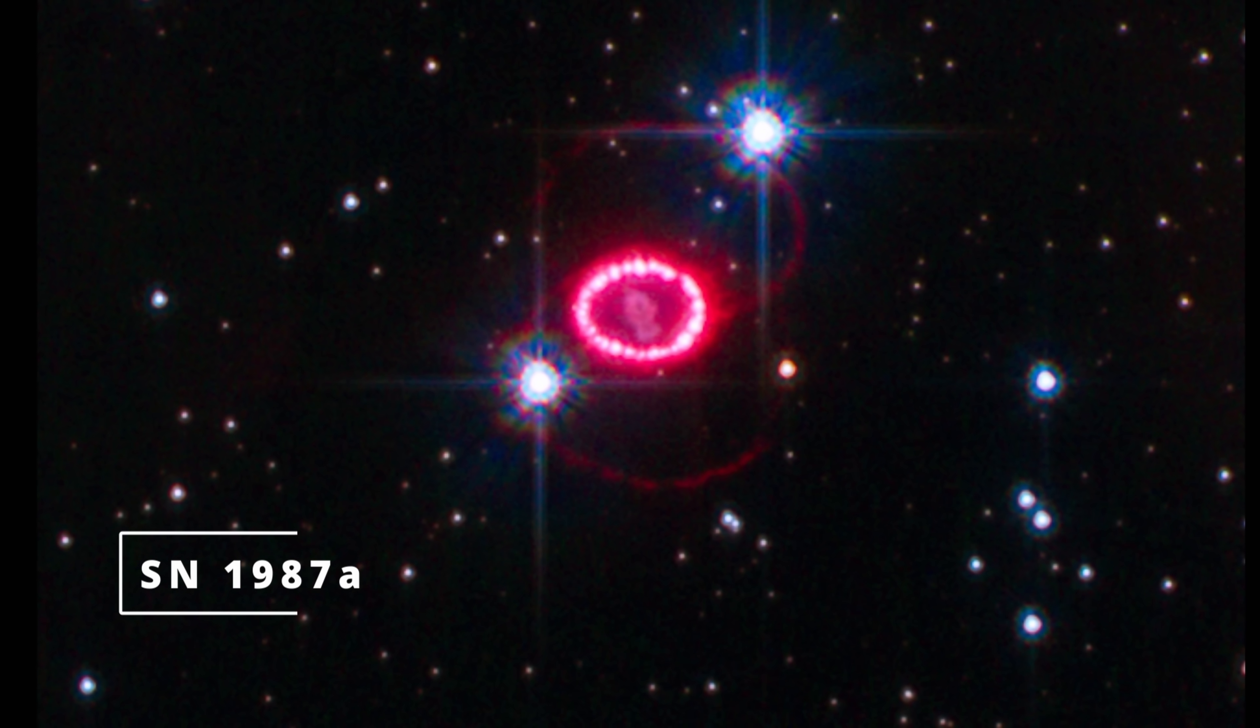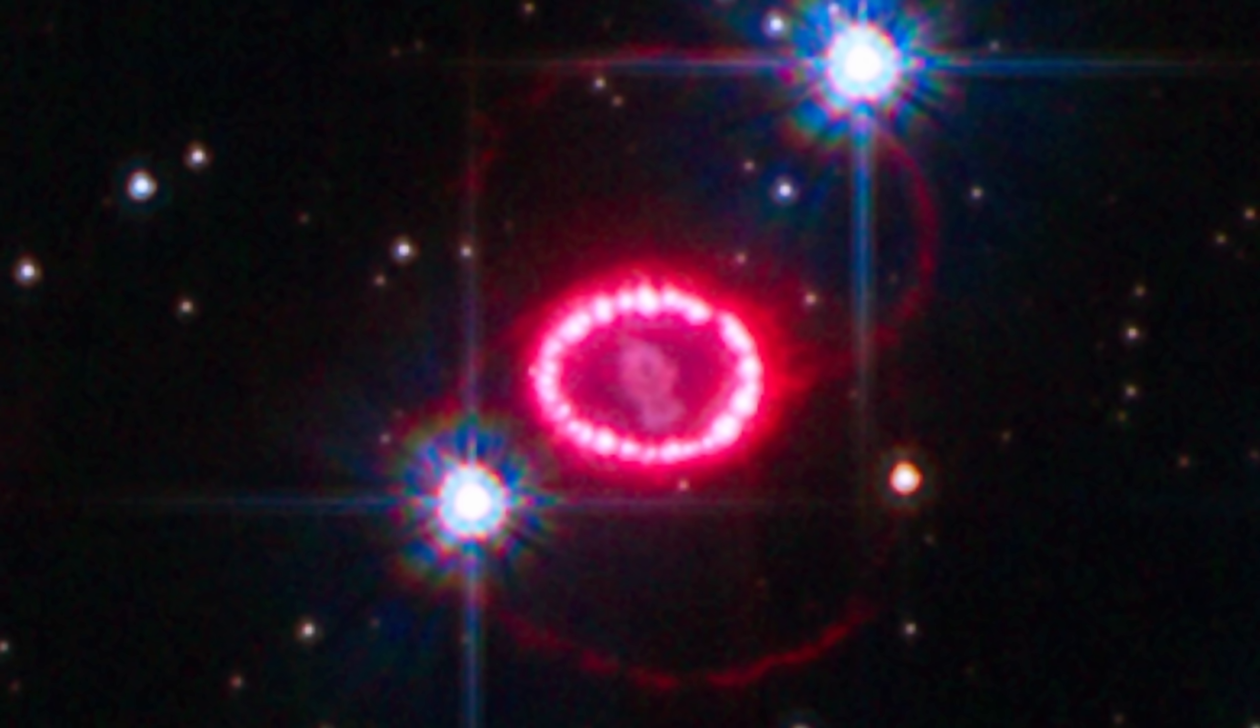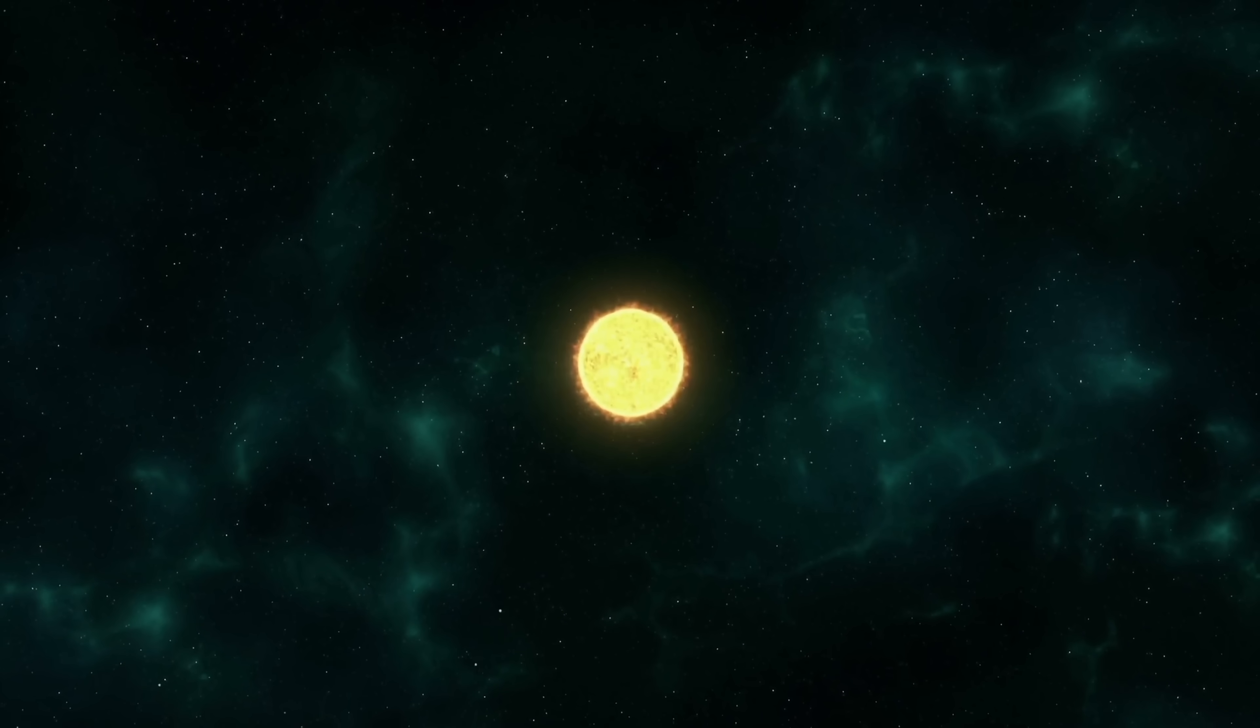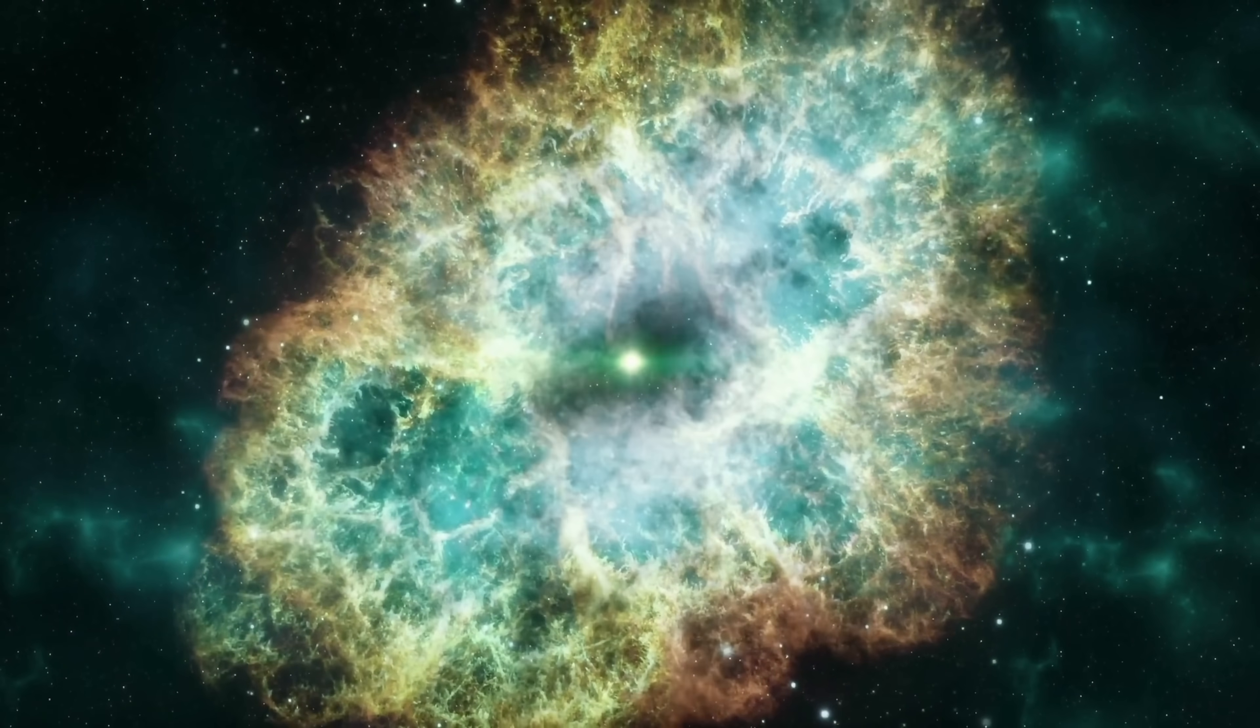Although it's not as close as the famous SN 1987A, the supernova detected from the nearby Large Magellanic Cloud in 1987, this event was still pretty close. It was about 21 million light years away from us, making this one of the closest such events.